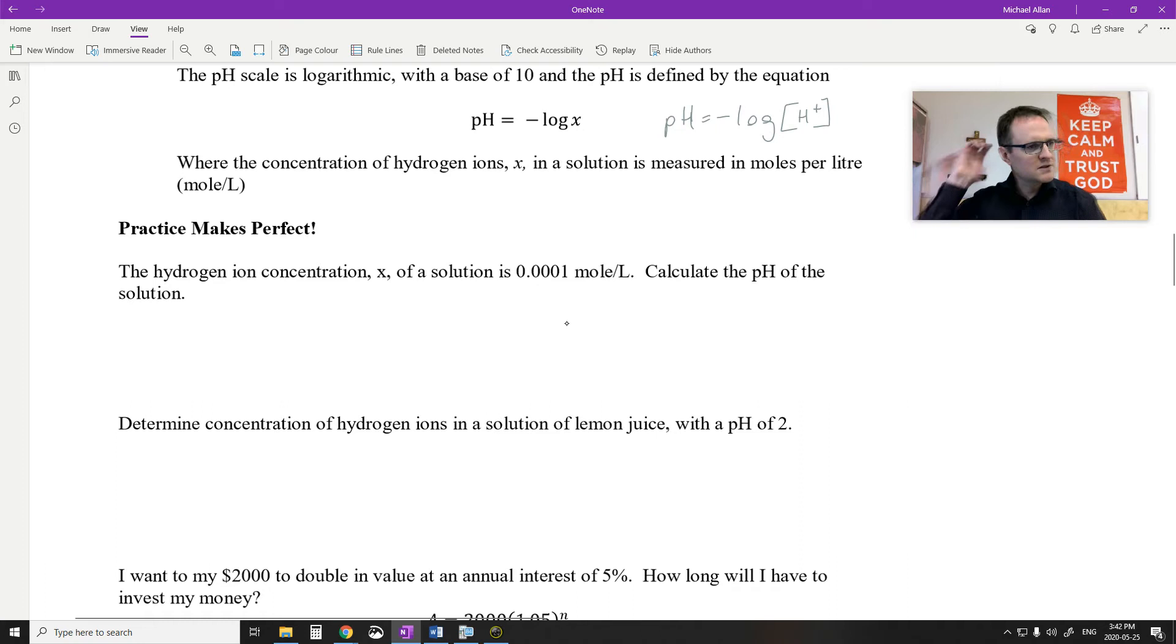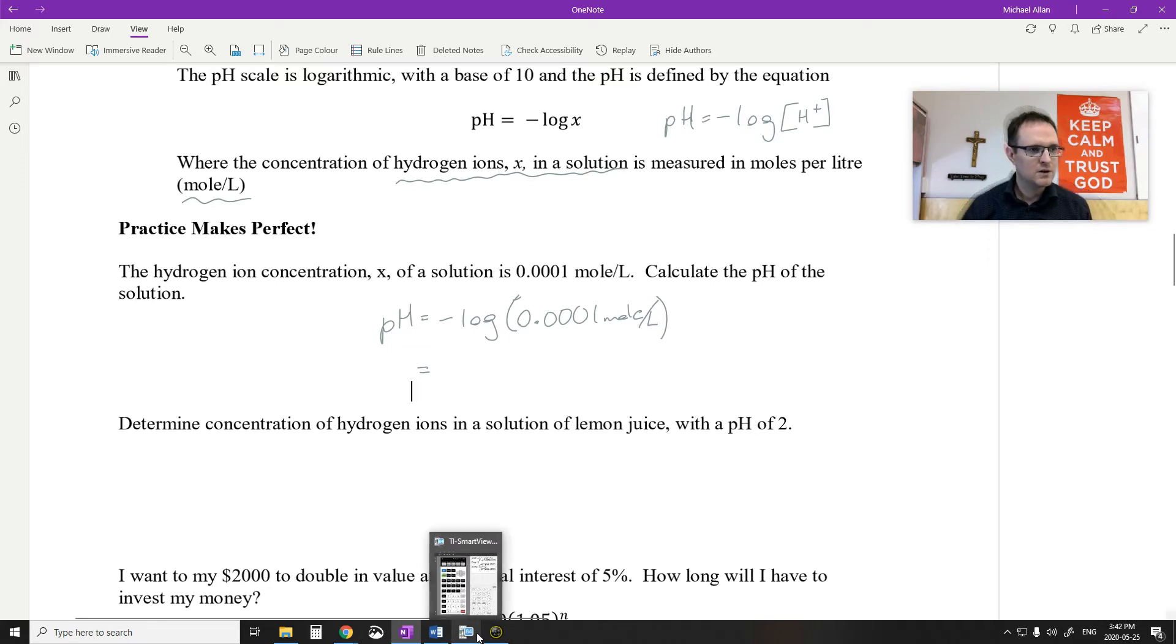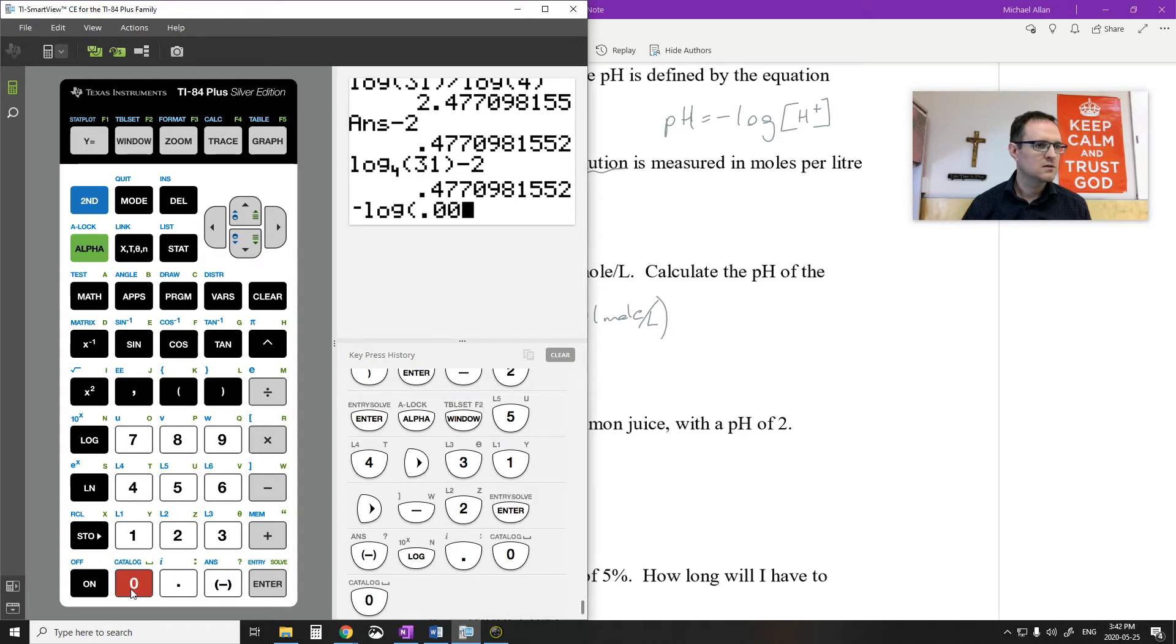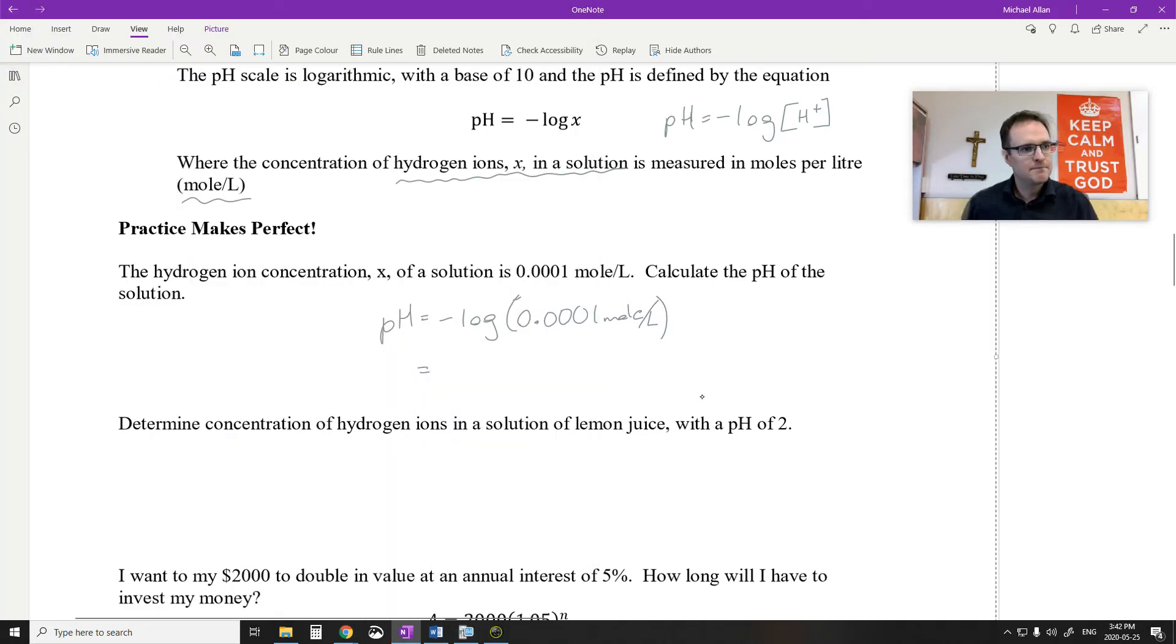Using this formula, if I know the hydrogen ion concentration, what is the pH of this solution? I'm just going to go pH is equal to negative log 0.0001. So the pH is 4. That's pretty acidic.